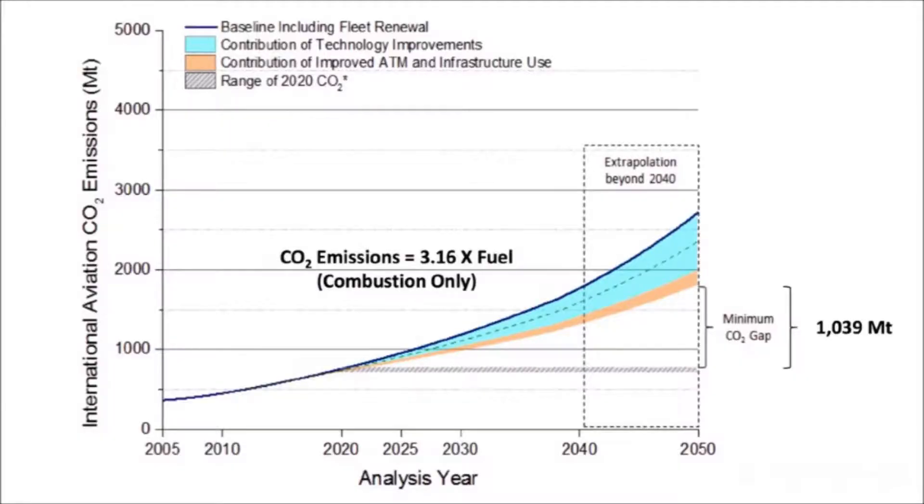Contamination is a problem that needs to be addressed. Aviation accounts for 2-3% of total emissions, with a growth rate of 5% annually. Aircraft emissions are directly related to fuel consumption, so if we want to reduce the emissions that our aircraft produce, we need to improve its efficiency.